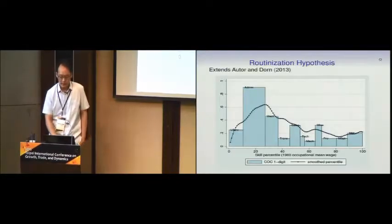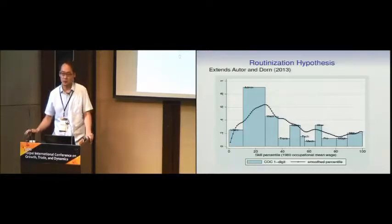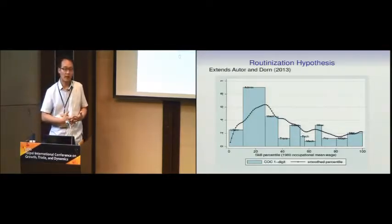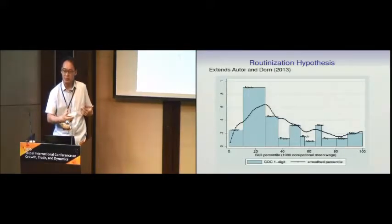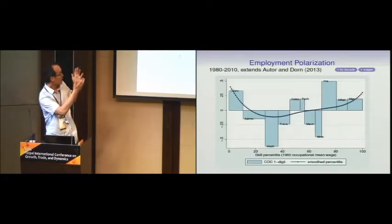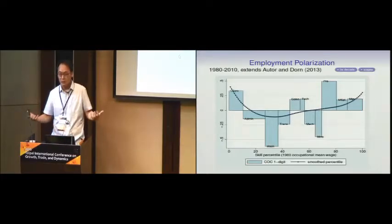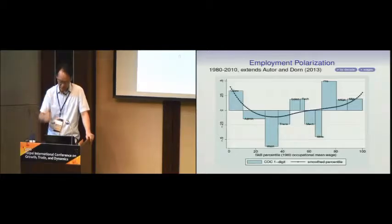Looking at this picture, Autor and Dorn hypothesized that maybe it has something to do with routinization. The idea is that some jobs are more easily codifiable, so they can be more easily replaced by machines and computers. Over time, those jobs shrink in the occupation structure. Other jobs are harder to replace with machines — like what we do — and their employment share increases. So there is a hypothesis.